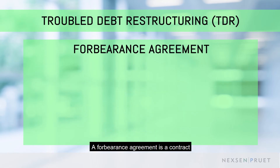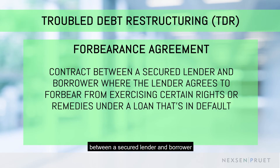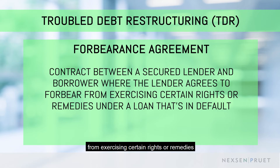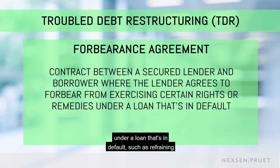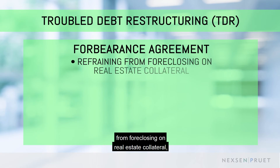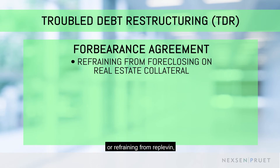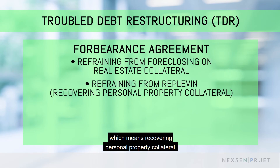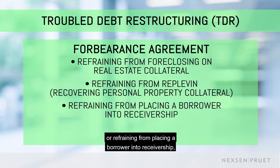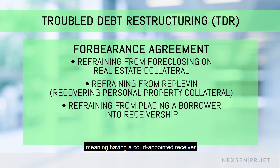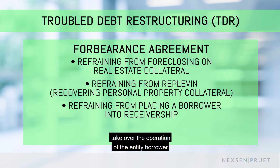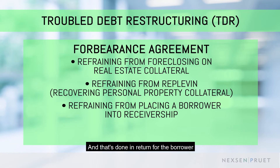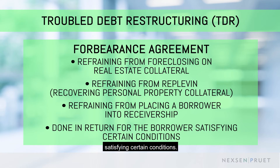A forbearance agreement is a contract between a secured lender and borrower where the lender agrees to forbear from exercising certain rights or remedies under a loan that's in default, such as refraining from foreclosing on real estate collateral, refraining from replevin — which means recovering personal property collateral — or refraining from placing a borrower into receivership, meaning having a court-appointed receiver take over the operation of the entity borrower in its accounts. And that's done in return for the borrower satisfying certain conditions.